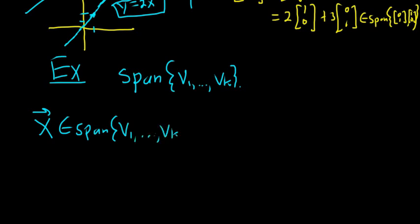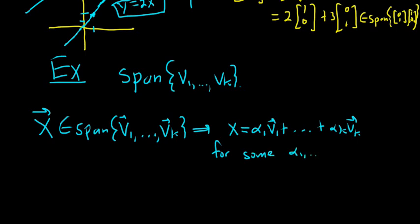So whenever you have x in the span, whenever this happens, then you can say this implies directly that x is a linear combination of these. So x is equal to alpha sub 1 v sub 1 plus dot dot dot plus alpha sub k v sub k. For some, right, you can't specify them, you just know they exist. For some alpha 1 to alpha k.